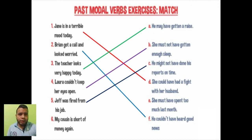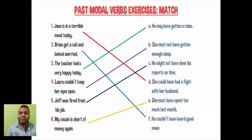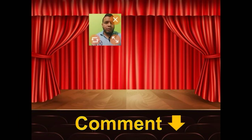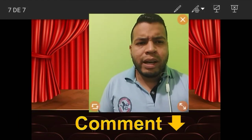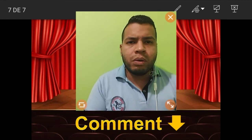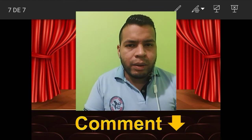And the last one: my cousin is short of money again — he must have spent too much last month. Ella debe haber gastado mucho dinero el mes pasado para que no tenga. So, as homework guys, you are going to make a review about this video. Hacemos un pequeño summary — pequeño resumen acerca del video del día de hoy.